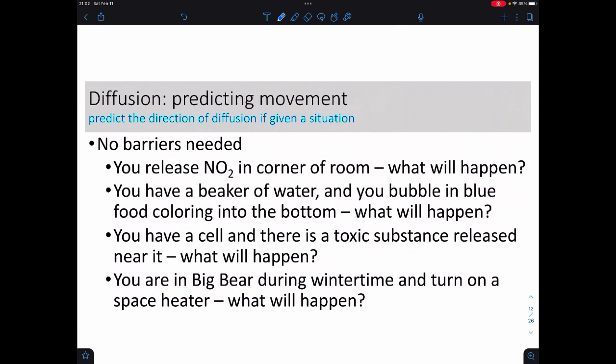So we can actually predict the movement in diffusion, because we just need to know where is it high, where is it low, and the answer is going to be it's going to move from where it's high to where it's low. That's always easy. So, for example, if you released nitric oxide from the corner of a room, it's a brown gas, not particularly good for you to breathe in, what would happen? Well, it's going to fill the room until it looks the same everywhere. As simple as that.